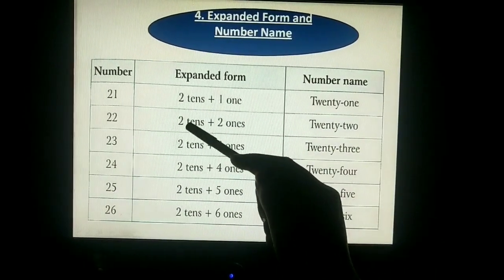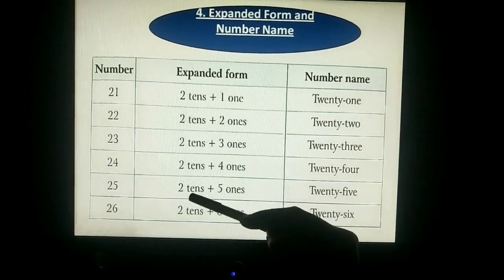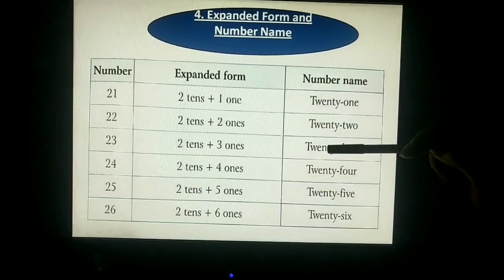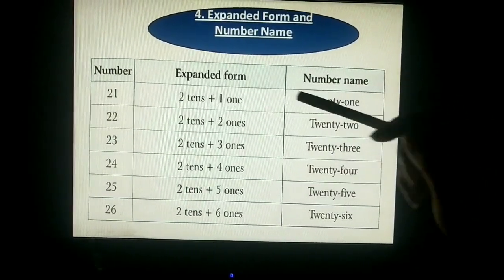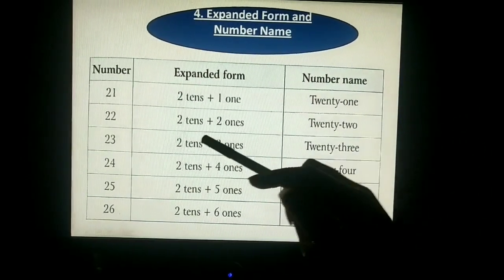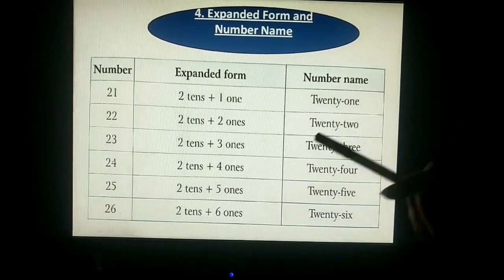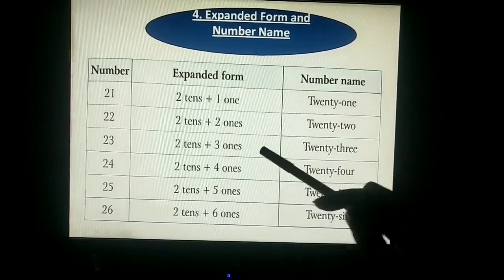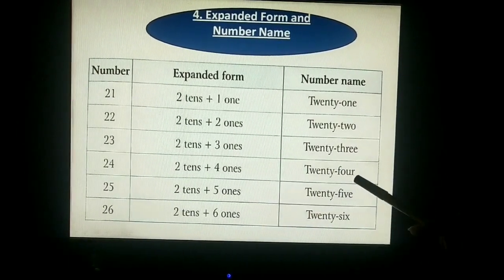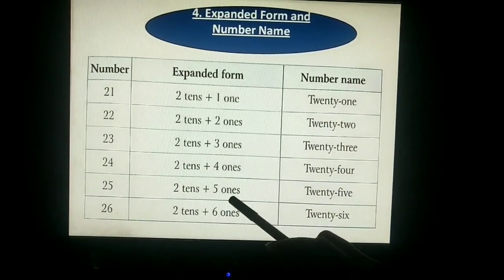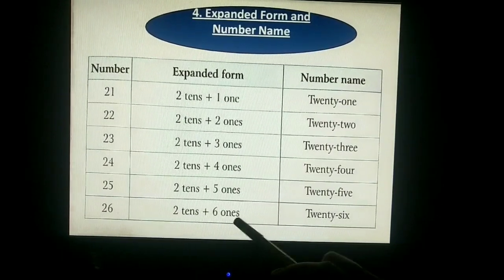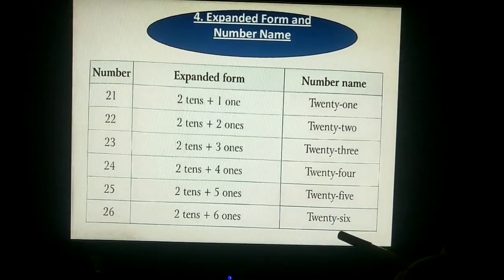Because 2 tens — we write the number names: 20, 21, 22, 23, 24, 25, 26.